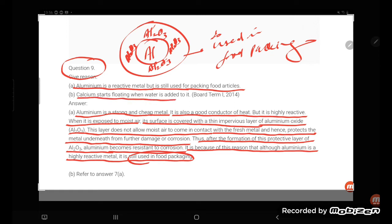Calcium starts floating when water is added to it. So calcium is there and hot water is there. It forms calcium hydroxide and simultaneously releases hydrogen gas.